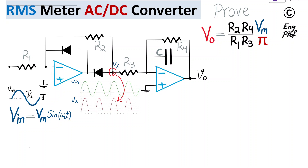During the first half of one period, from time 0 to T/2, as the input is positive and increasing, the output at the intermediate node Vx exactly follows the input. The moment input goes to zero and becomes negative, Vx remains at zero. This is the half-wave rectifier behavior — it only passes the positive half of the sinusoidal signal.